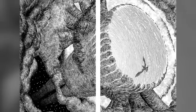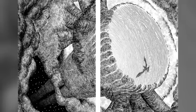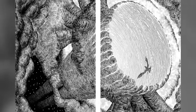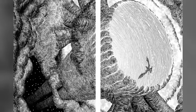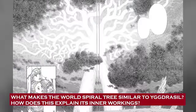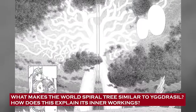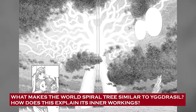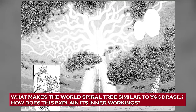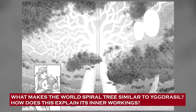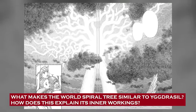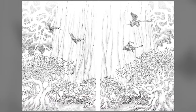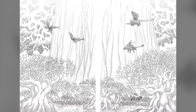We'll explain what we mean by that in a few moments, but for now let's pivot from how the world tree was created to what it was inspired by and how it actually works. What makes the World Spiral Tree similar to Yggdrasil? The first chapter that reveals the World Spiral Tree to us in its full regalia is chapter 307, where Miura-sensei makes it a point to compare it to other important trees from real-world mythologies and religions.